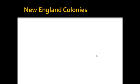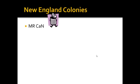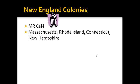The New England colonies consisted of four colonies that are easy to remember with the phrase 'Mr. Can,' the first letter of each colony name: Massachusetts, Rhode Island, Connecticut, and New Hampshire.